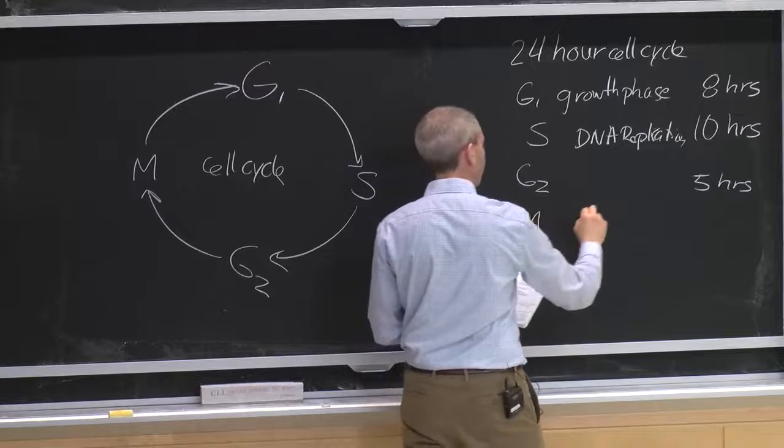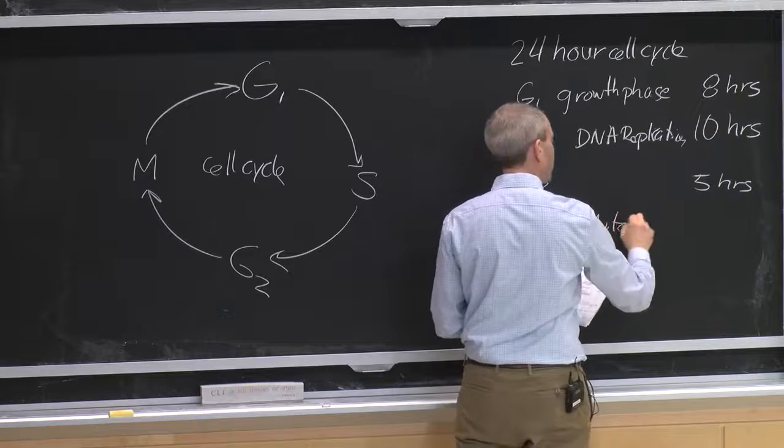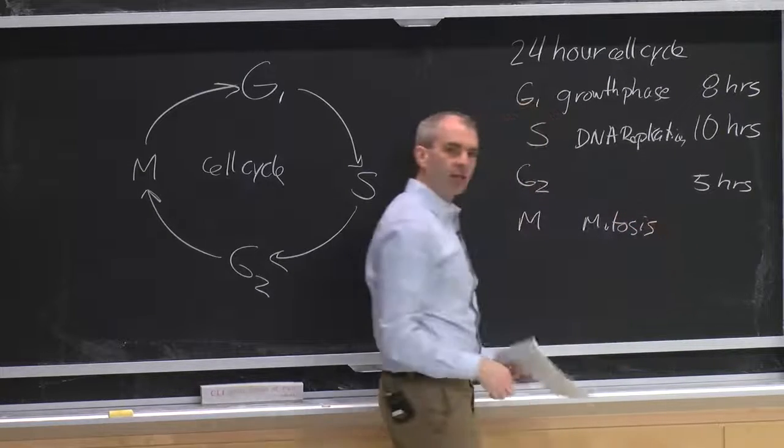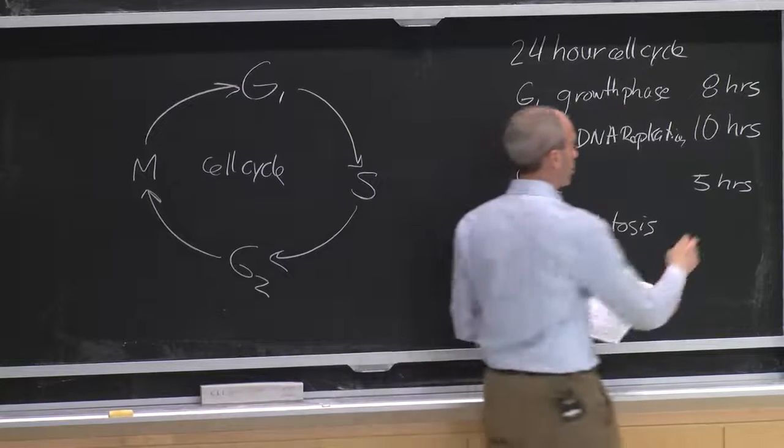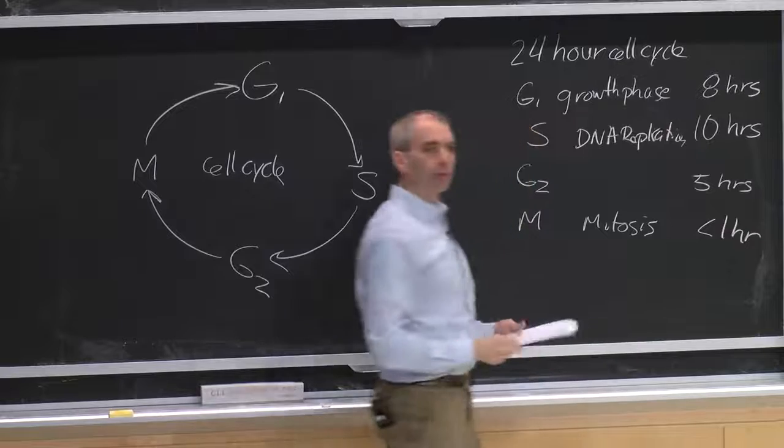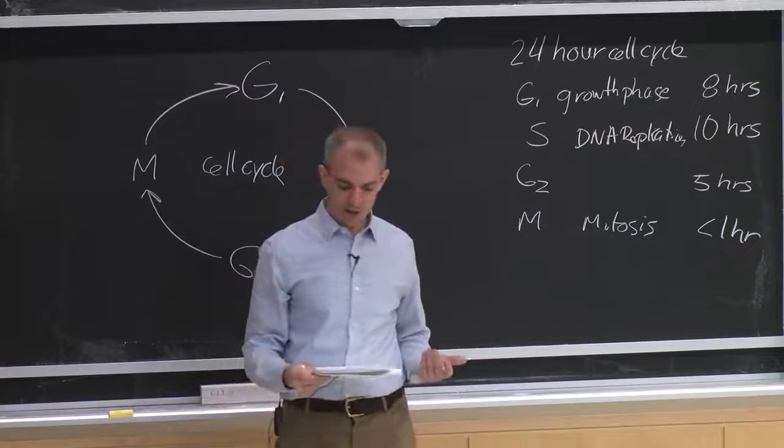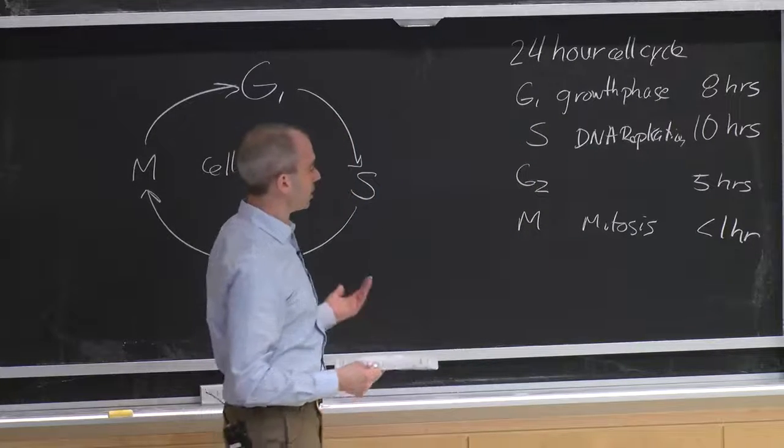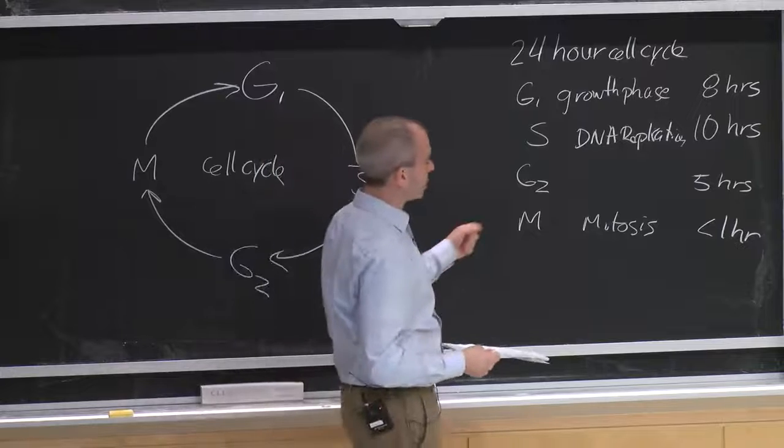And then this M phase mitosis, which seems like such a dramatic thing to be doing, is actually incredibly quick. And so it usually takes less than one hour. So the actual portion of time that a cell is going to spend dividing in mitosis of the entire cell cycle is actually quite low.